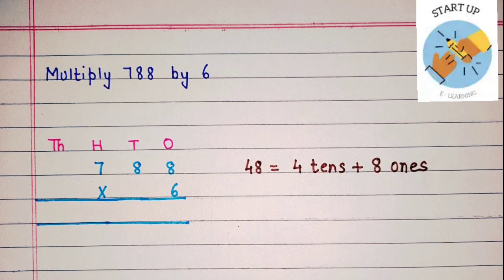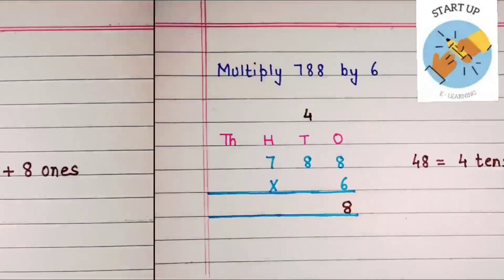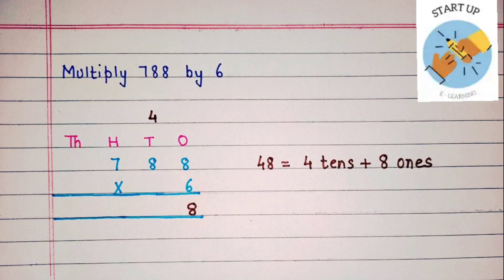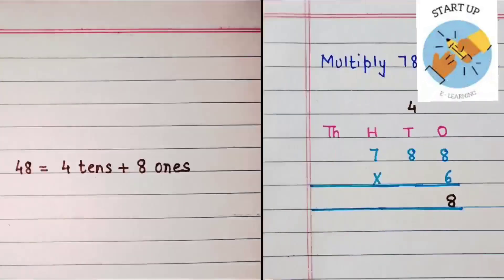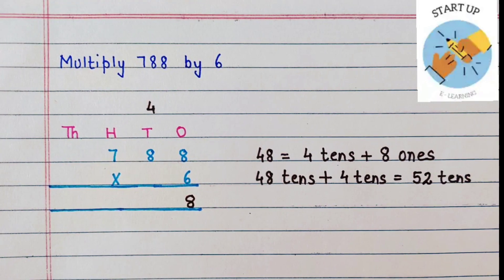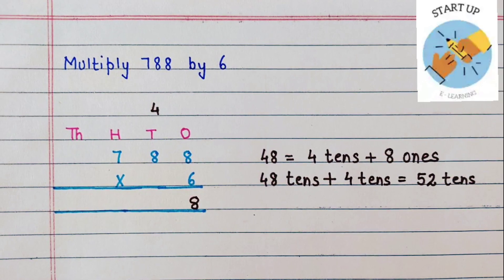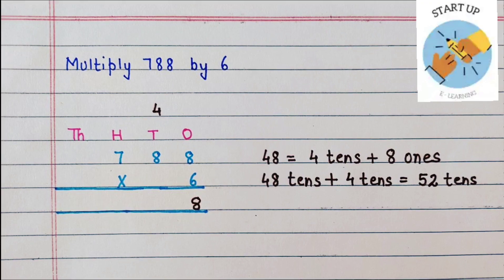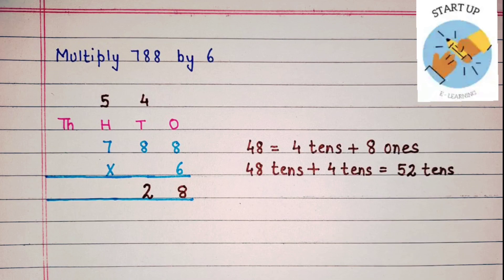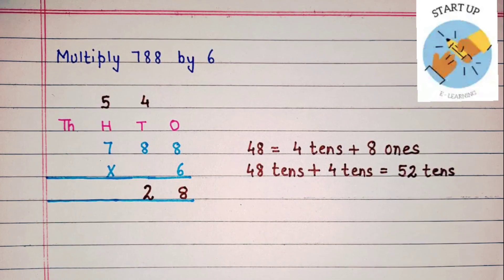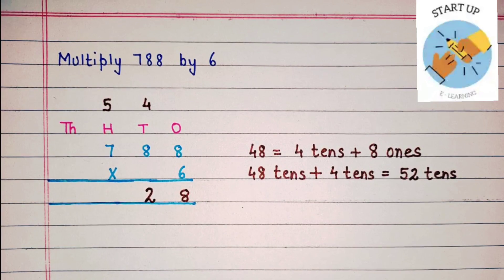6 multiplied by 8 is equal to 48. It has 4 tens plus 8 ones. The digit at the 1's place, that is 8, will be written under 1's place, and the digit at the 10's place, that is 4, will be carried over on 10's. Now let's multiply 6 by 8, the digit at the 10's place. 6 eights are 48. 48 tens plus 4 which were carried over is equal to 52 tens. So it has 2 tens plus 5 hundreds. We are going to write 2 under 10's and 5 will be carried over on 100's.